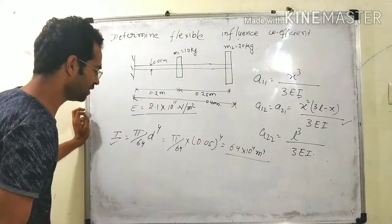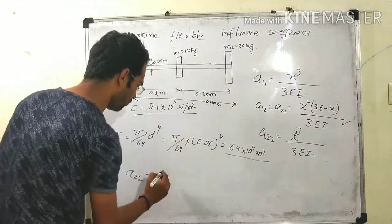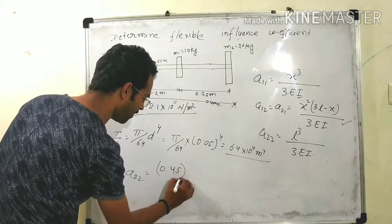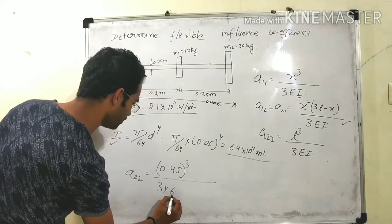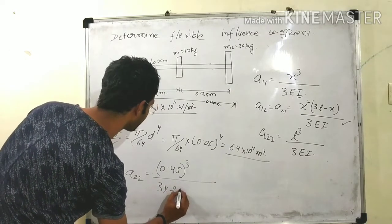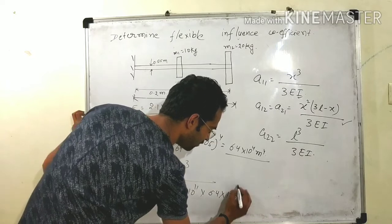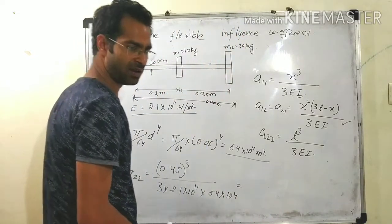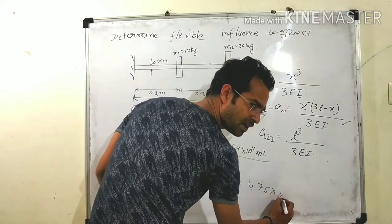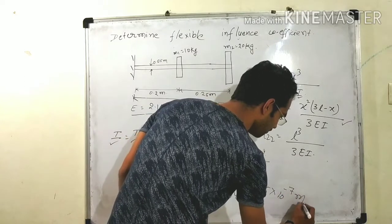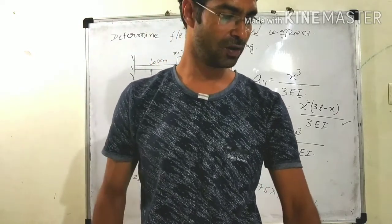Now I will solve A22. A22 equals L³ divided by 3EI, where L = 0.45 meter. Its value is (0.45)³ divided by 3 × 2.1 × 10¹¹ × 6.4 × 10⁻⁷. Solving this gives A22 = 4.75 × 10⁻⁷ meter per newton. So finding the value of the influence factor is very simple.